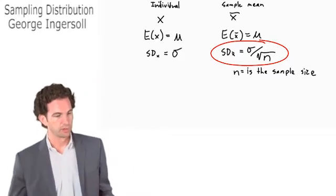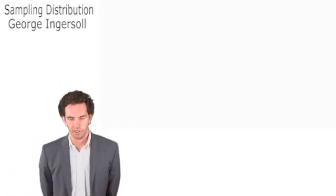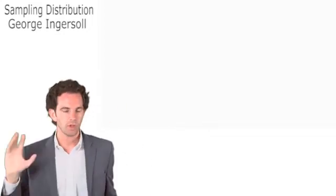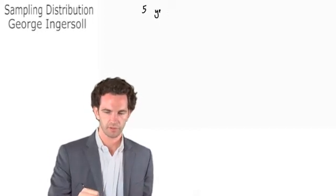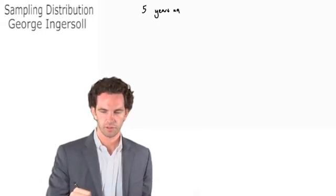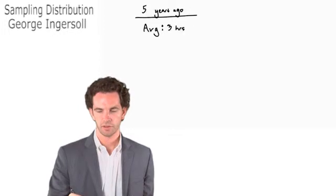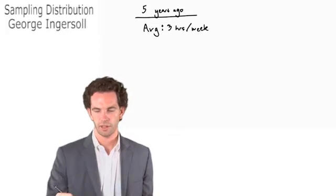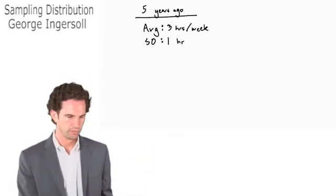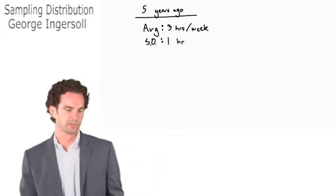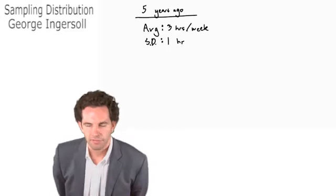Let's look at another example. In the last video, we talked about measuring Americans' internet usage. Five years ago, we measured an average of three hours per day and a standard deviation of one hour. We want to update and see if there's been a change — maybe internet usage has gone up or down. We want to update what we know about Americans' internet usage.